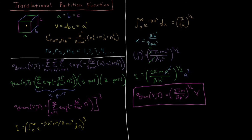We started with just what the energy levels were and the Boltzmann factor for each energy level, and by summing over all Boltzmann factors of every energy level we obtained the translational partition function. From this we can derive thermodynamic properties via derivatives and logarithms — going all the way from the microscopic quantum mechanical behavior through statistical mechanics to macroscopic thermodynamics.